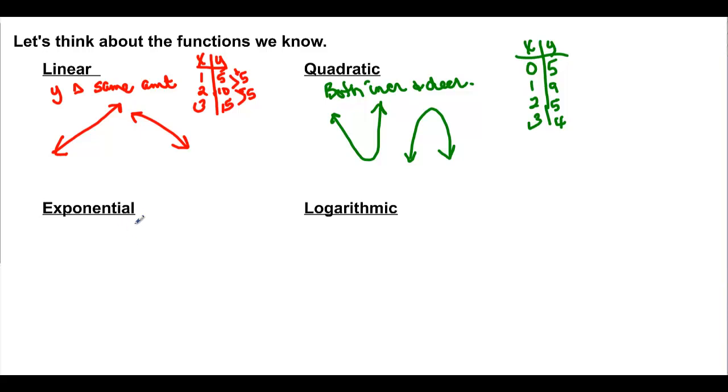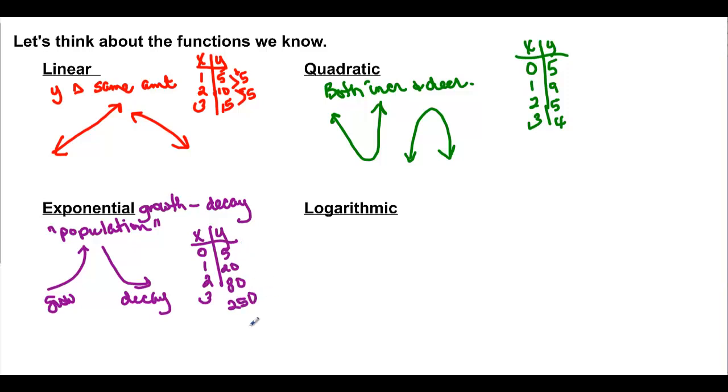Exponential is going to have growth or decay. The kinds of problems that they are are often a population problem. Population of bacteria, population of people, population of atoms, all kinds of things. The graphs look something like this. They're either going to be increasing or decreasing. This is a growth, and this is a decay. If you think about your table, this one starts out slow and increases rapidly. This one decreases rapidly and then kind of levels out a little bit. I might have something like 5, and then 20, and then maybe 80, and then 250. It's growing rather quickly.